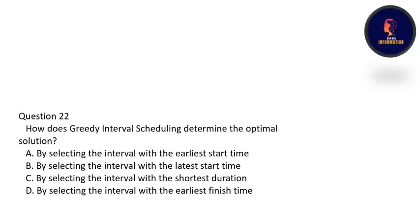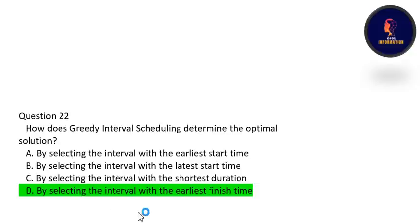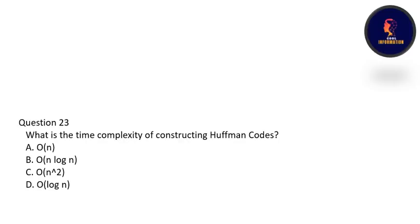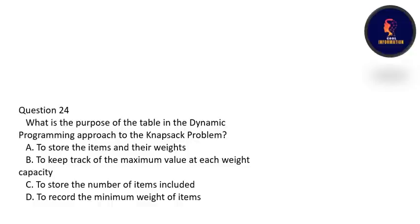How does greedy interval scheduling determine the optimal solution? The correct option is B — by selecting the interval with the earliest finish time. Remember this point: selecting the interval with the earliest finish time is how greedy interval scheduling determines the optimal solution. What is the time complexity of constructing Huffman codes? The time complexity is O(n log n) — option B is correct. What is the purpose of the table in the DP approach to the knapsack problem? The table is used to keep track of the maximized value at each weight capacity — option B is correct.